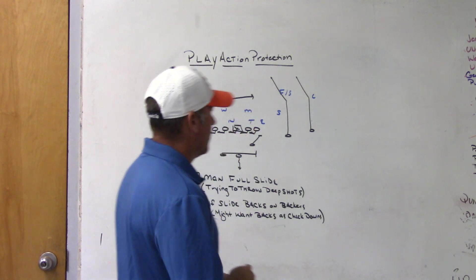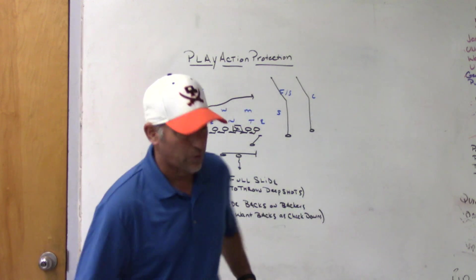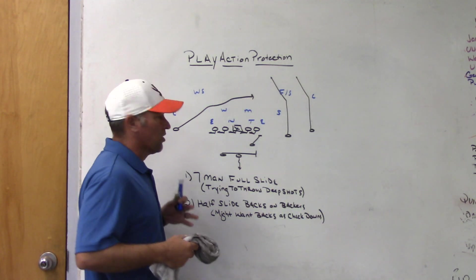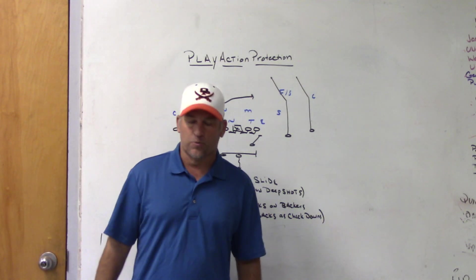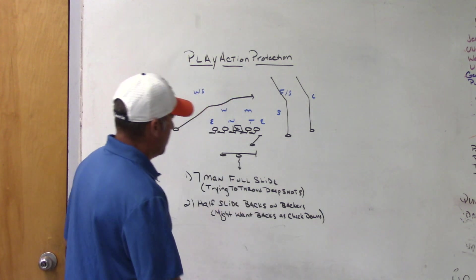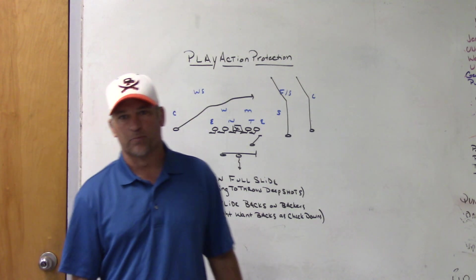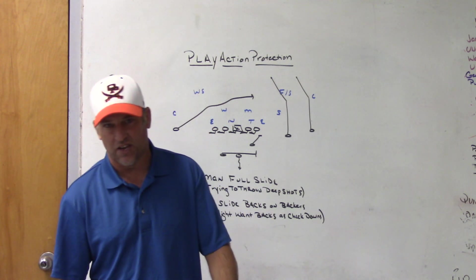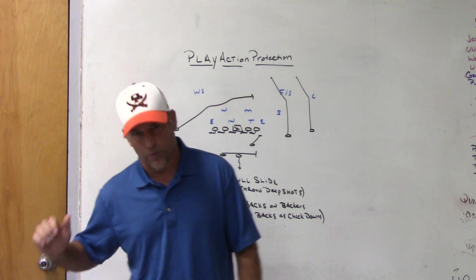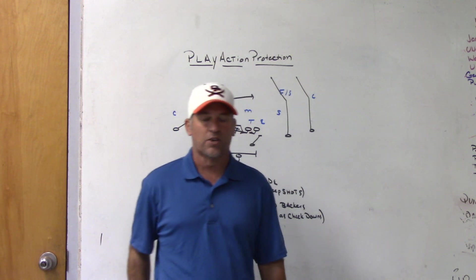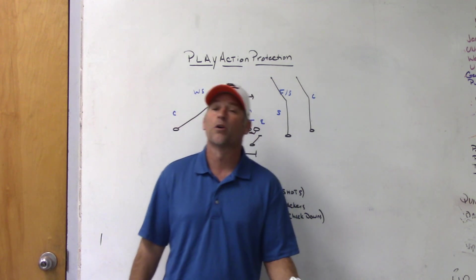We're going to take a look at play action protections and the two different ones that you can use. I'm going to talk about the one that we use first. For us, we use a seven-man full slide protection, and we do it out of two backs and three backs the most. It's most effective for us. It gives us a full gap-out scheme where we're trying not to throw the ball hot off a linebacker blitz as we're trying to protect against at least seven coming.